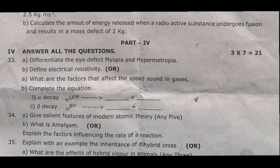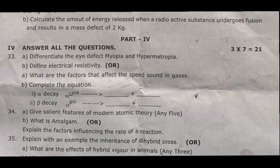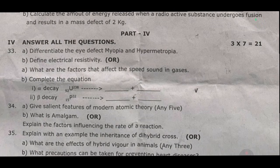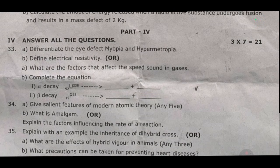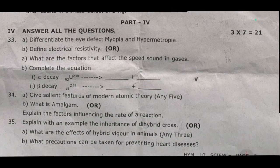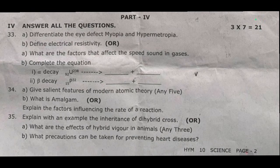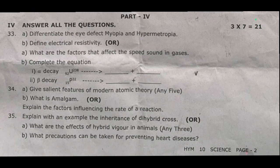Thirty-five: explain with an example the inheritance of a dihybrid cross. Or A: what are the effects of hybridization on animals? — any three points. B: what precautions can be taken for preventing odd diseases?